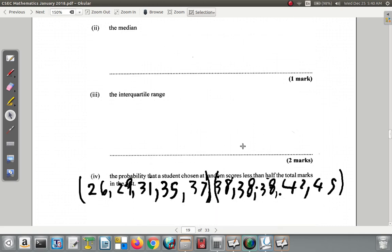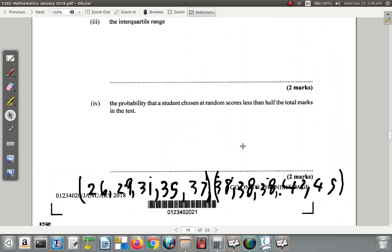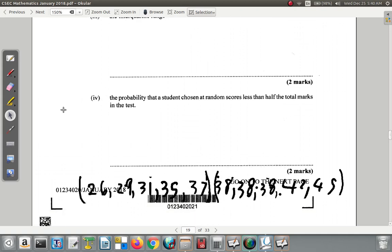So the probability of scoring less than half of the 60 marks would be how many scored less than half of 60, which means how many scored less than 30, divided by the total number of students available. That's the total number of students there. There are 10. How many scored below the pass mark? 1, 2 of them. One got 26, the other one got 29. Everybody else got 30 or more.